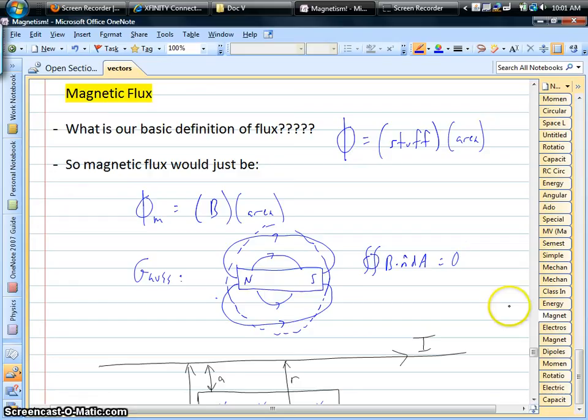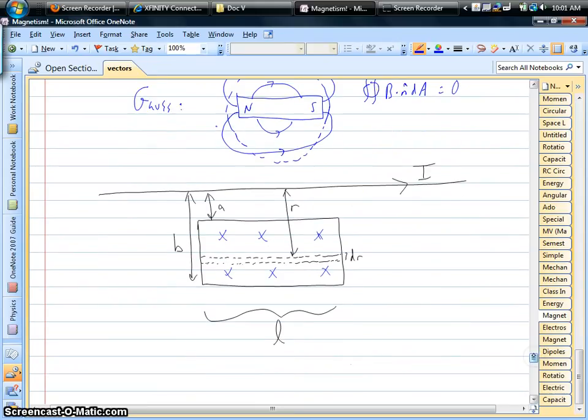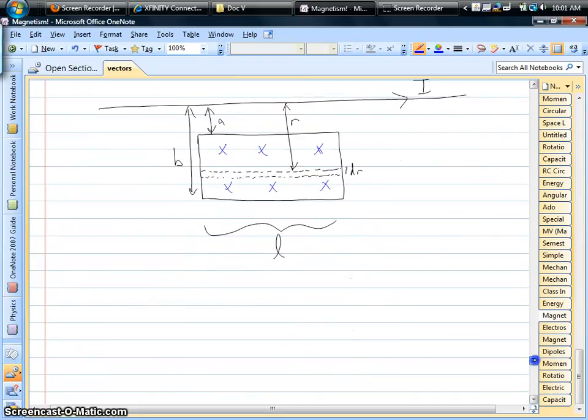Now we're going to try a case where we do have flux. Rather than a closed surface, we could just have like a loop, a loop of wire or a circuit or something like that. So we have kind of this funny looking picture here with a rectangular hoop of wire below a straight wire with a current running through it. And our goal is to find the flux through that rectangle.